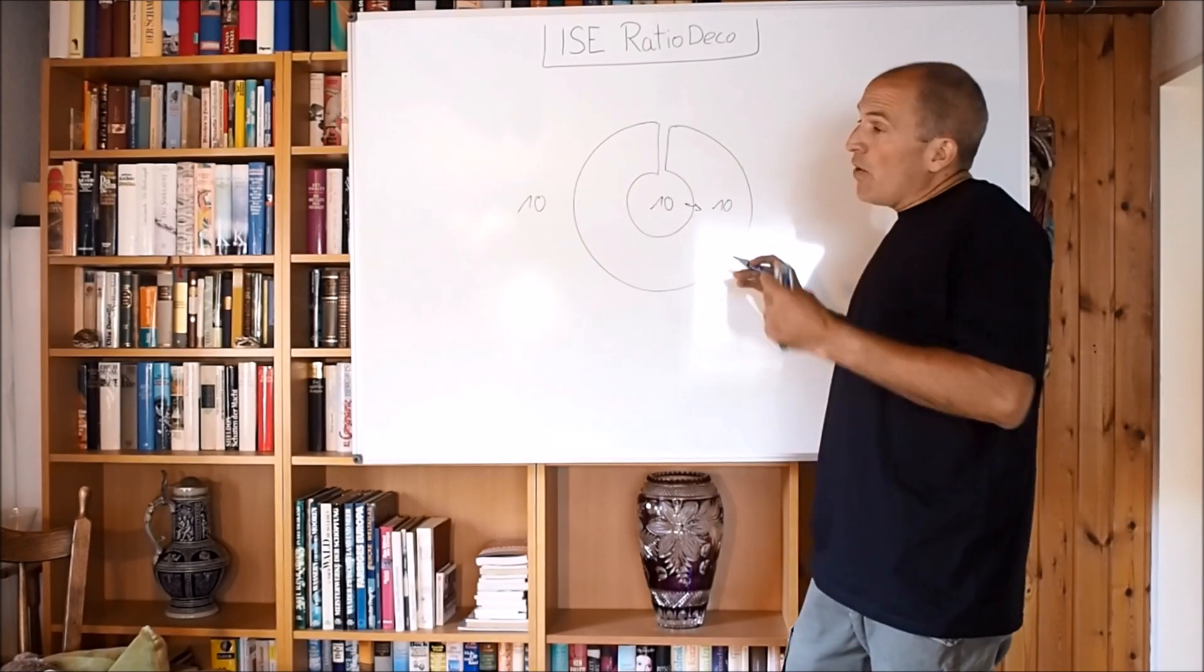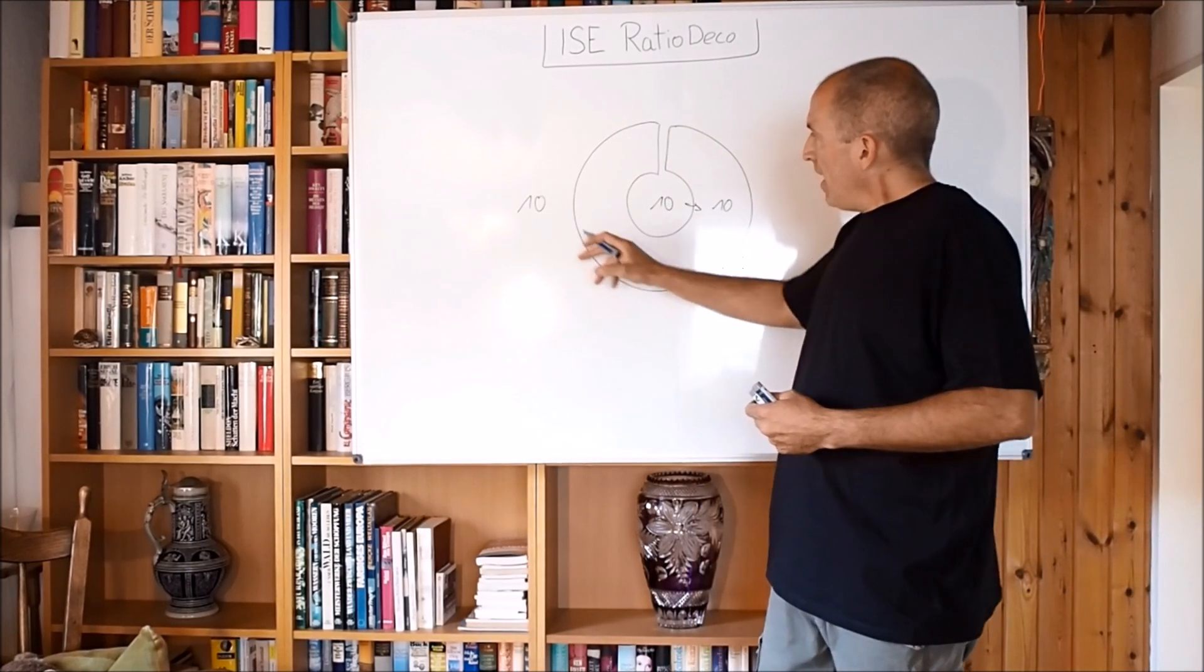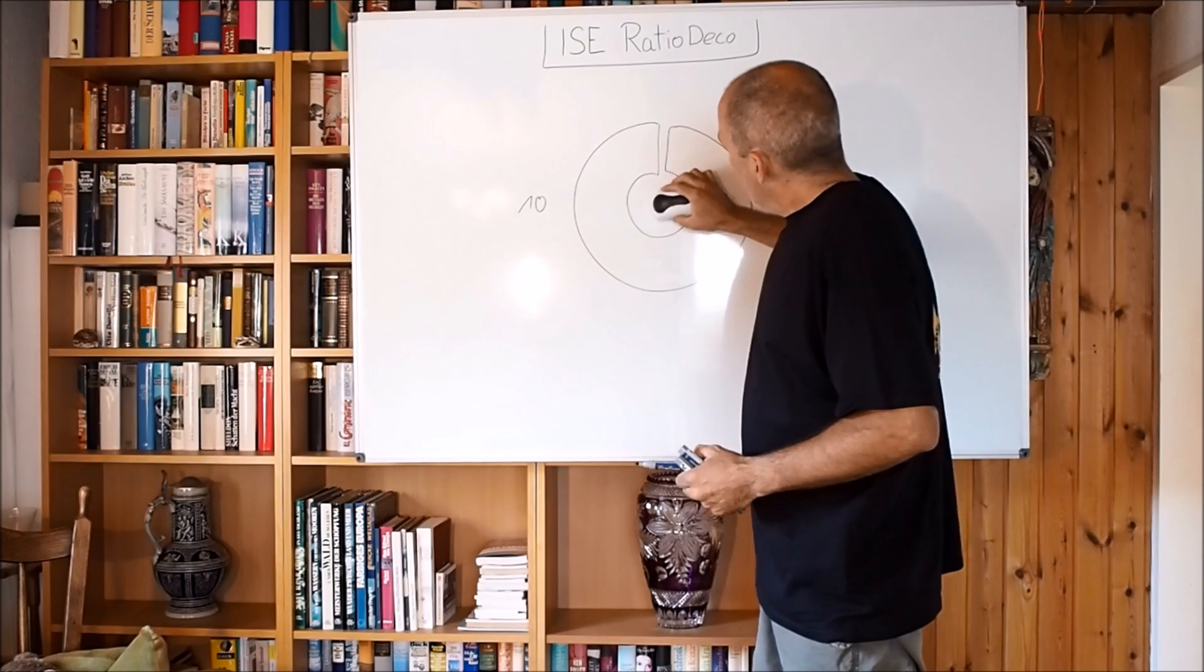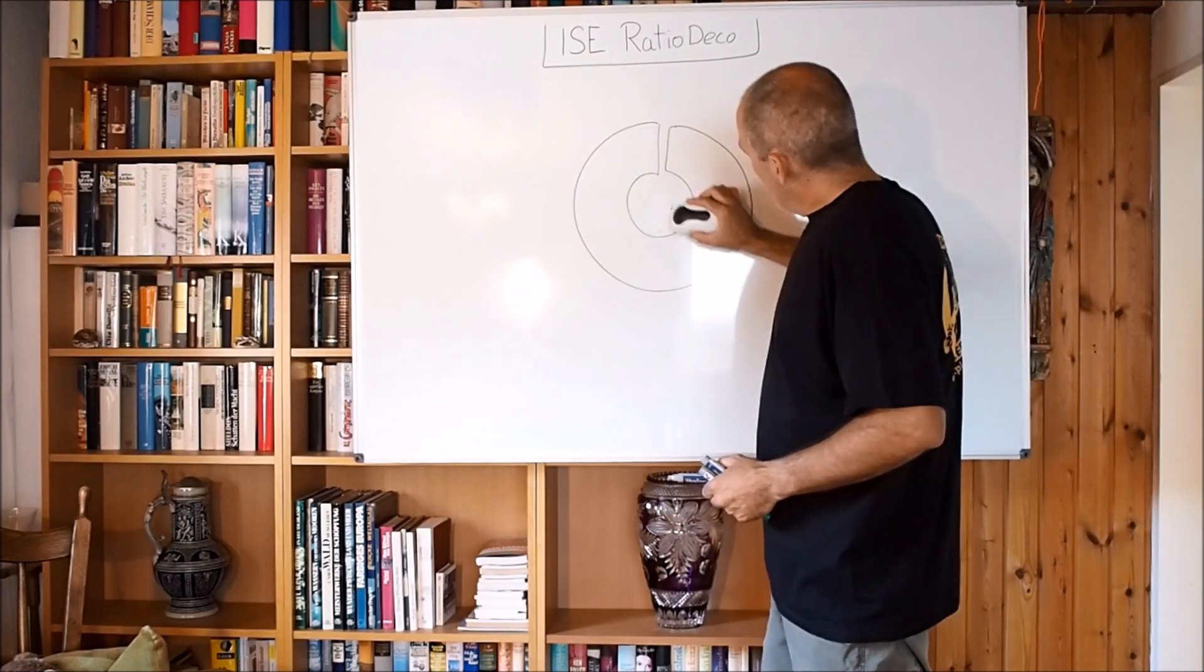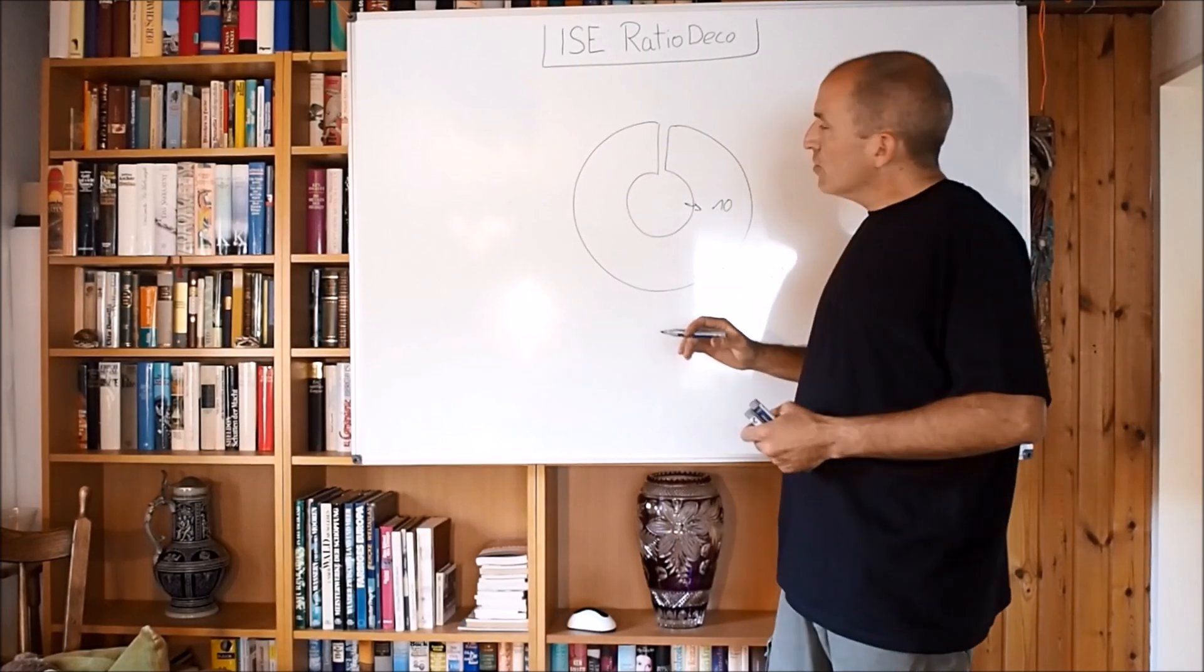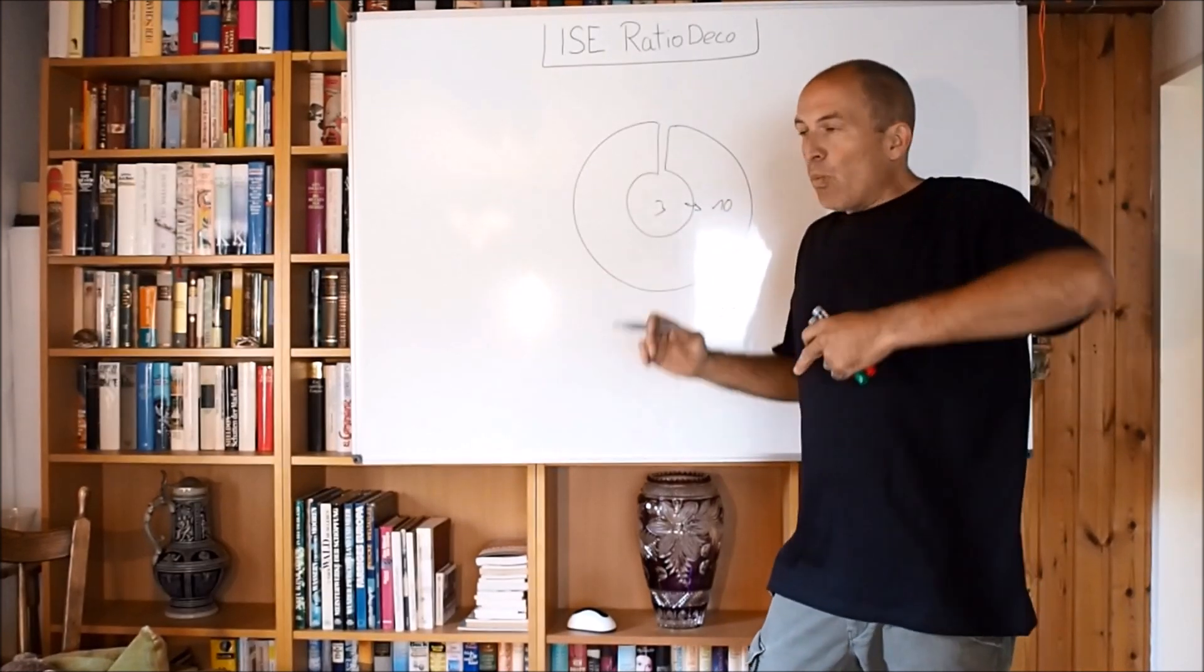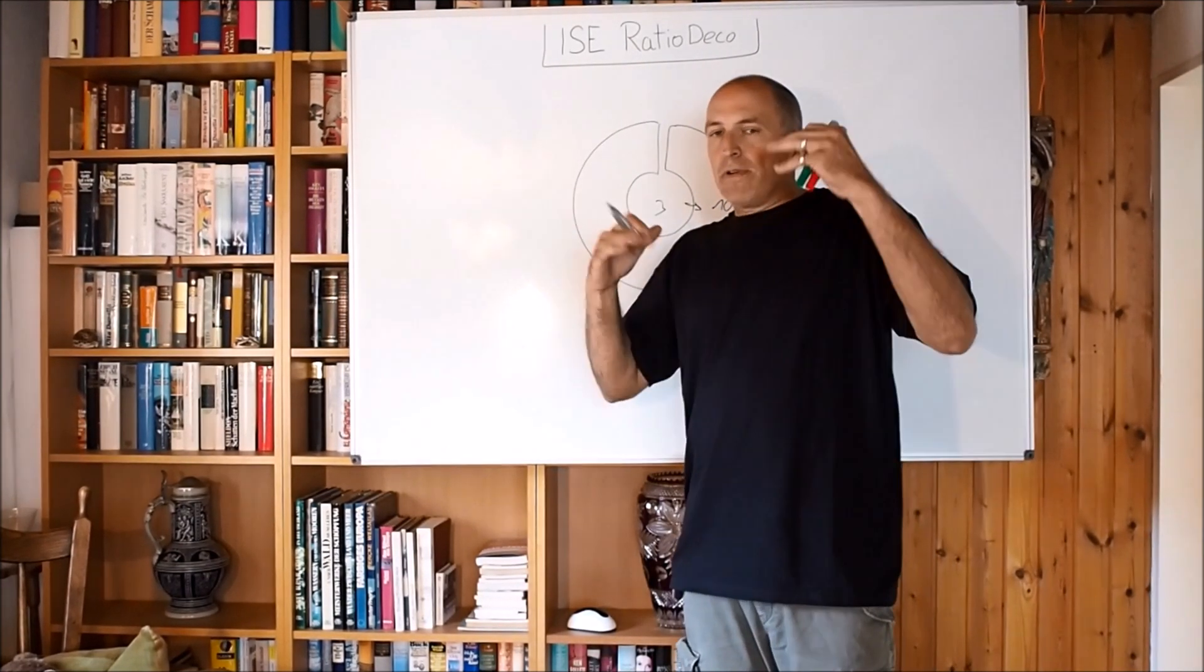So now when we start to ascend, obviously we reduce the pressure here and we reduce the pressure here. So let's say you have a buoyancy issue and you pop up to 20 meters. So suddenly you have only 3 bars here and 10 bars here. So that explains why you go to the chamber, because a lot of gas—I mean the gases always have the tendency to equalize themselves.